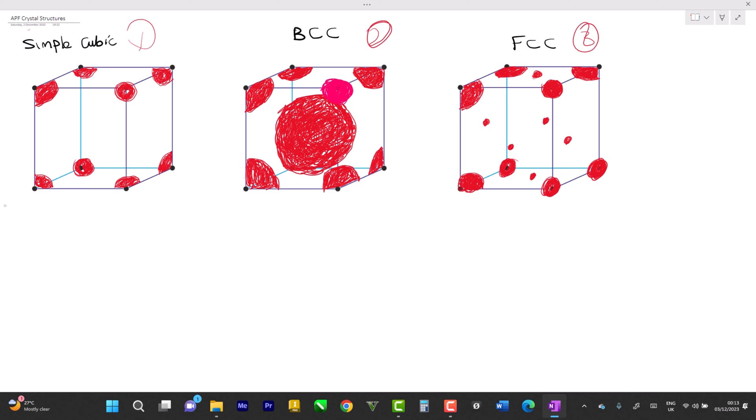So here if we count we have eight lattice points: one, two, three, four, five, six, seven, eight. So we wouldn't just assume that we have eight atoms, no, because these atoms are not complete. Now I want you to look at an orange. Every atom you see at each side of the lattice point or the cubic structure.